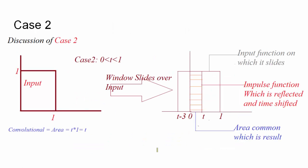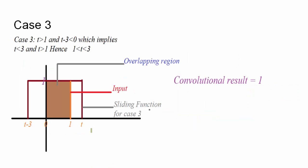Second case: when t lies between 0 and 1, you get some overlapping area between the input function and the impulse function. The area equals length times breadth — length is t (from 0 to t) and breadth is 1, so area equals t. Third case: when t is greater than 1 and t − 3 is less than 0, meaning t lies between 1 and 3, the overlapping result is 1 by 1, so area equals 1 and the output equals 1.